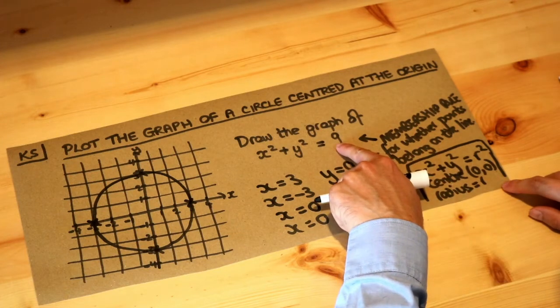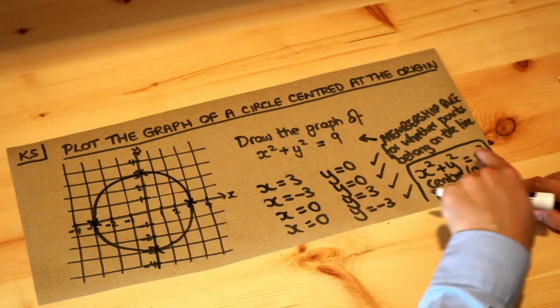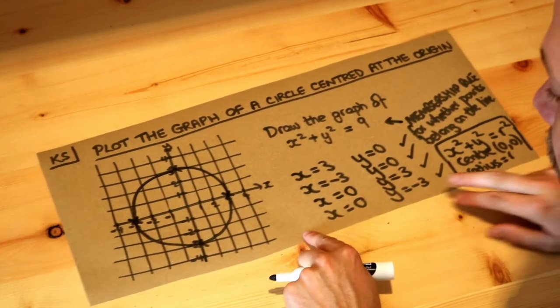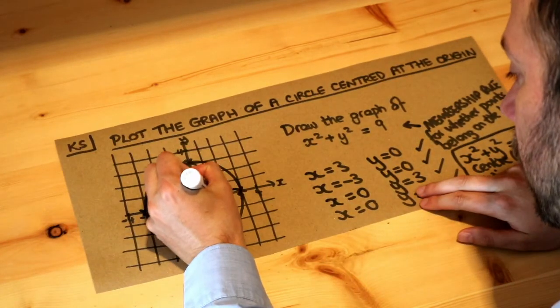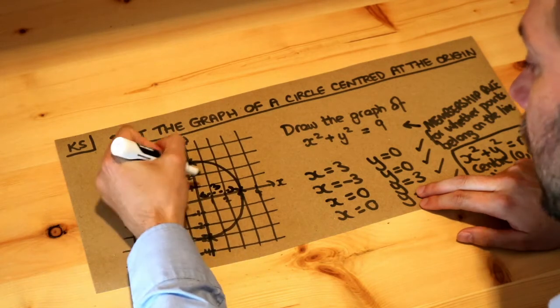So what squared gives you 9? Well, it's 3. 3 squared is 9, so r would be 3. And you can see, look, the radius of this circle, that's a distance of 3 in every direction.